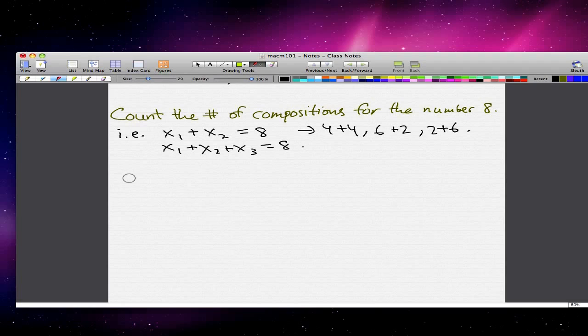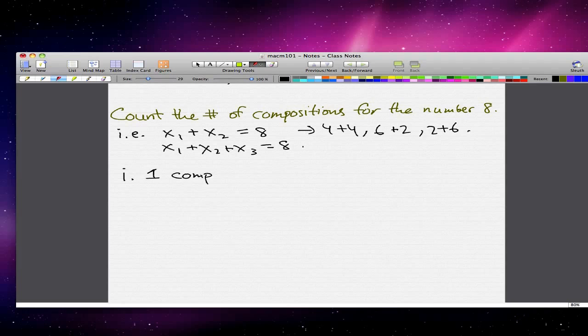So for the first part, how can we get, how many ways are there to get the, to get number 8 with one composition? So with one composition, well, if we just had x1, then the only way to make 8 is just to put 8. That's the only way to make 8 with one composition.